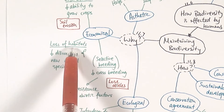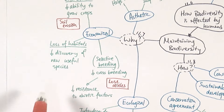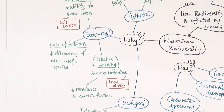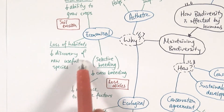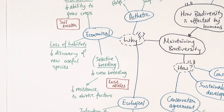Loss of habitat also means a lower chance of discovering new and useful species, because they may be wiped out before we find them. A classic example is rainforests and coral reefs, where new antibiotics and medicines to treat cancer are increasingly being discovered. If we don't conserve these habitats, we won't be able to discover new things, which has clear economic advantages.